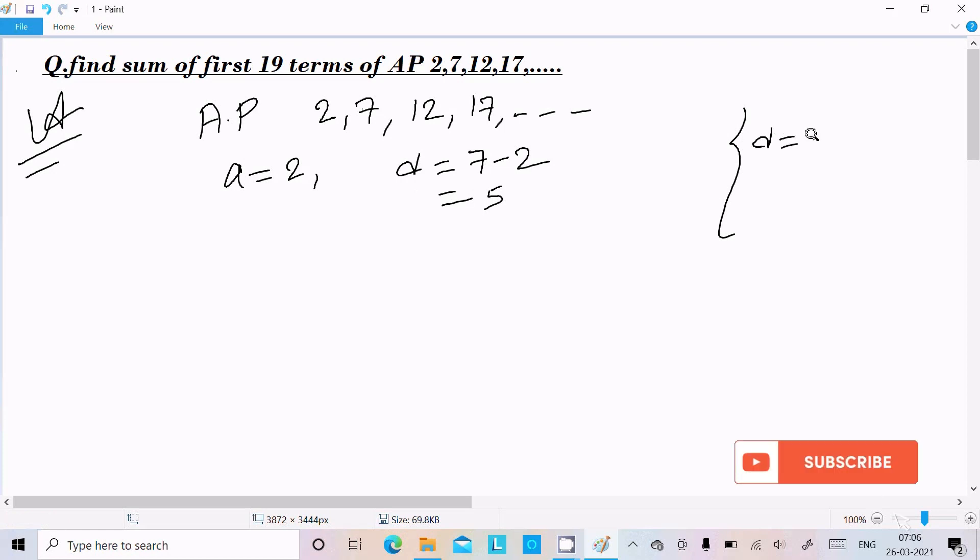So this is the nth term and n minus 1 term. Suppose if we give n value 2, and here a_2 minus 1, that is 1. So 2 position 7 is there and 1 position 2 is there, 7 minus 2 that is 5. Suppose if you give 3, so it becomes a_2, so 3 position 12 is there, 2 position 7 is there, 12 minus 7 that is 5. So here the common difference is 5.